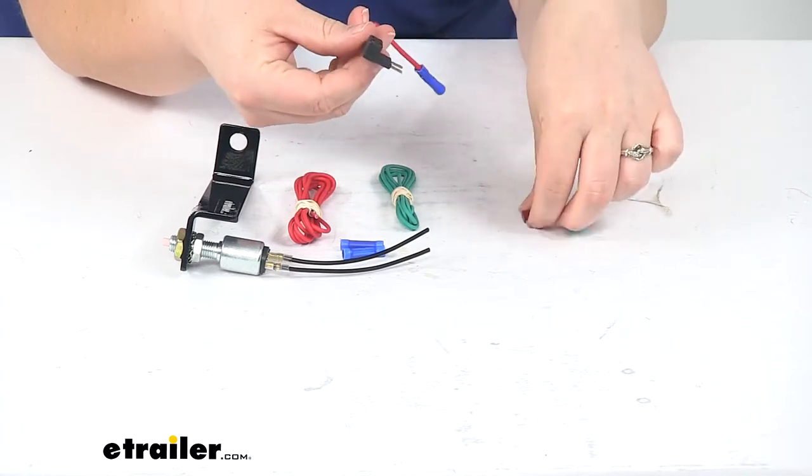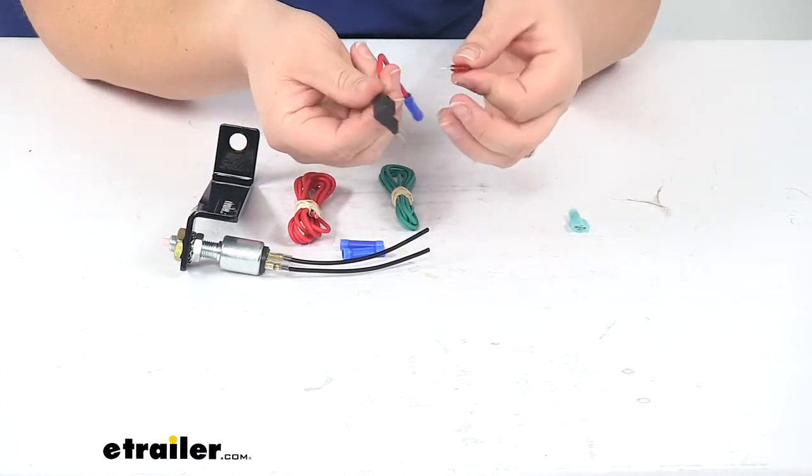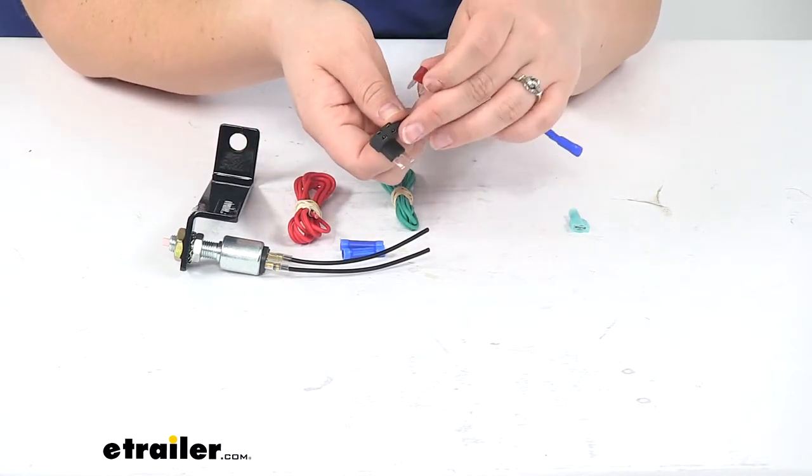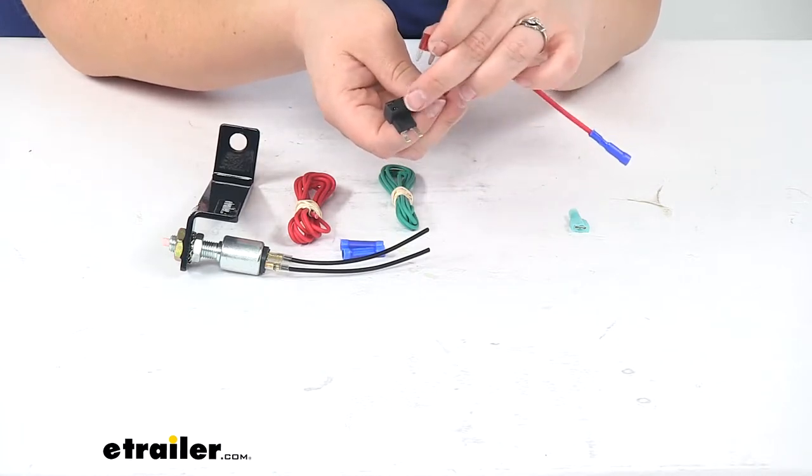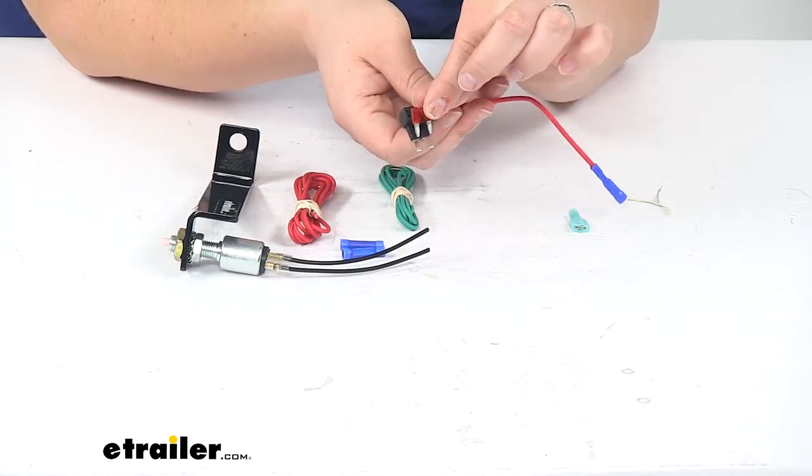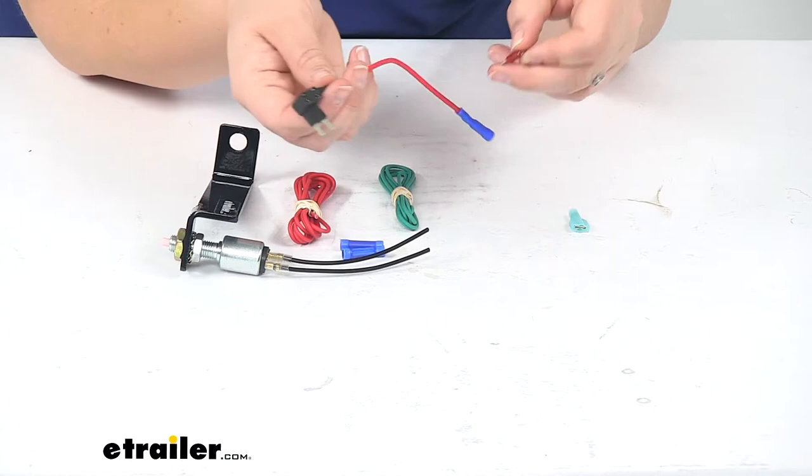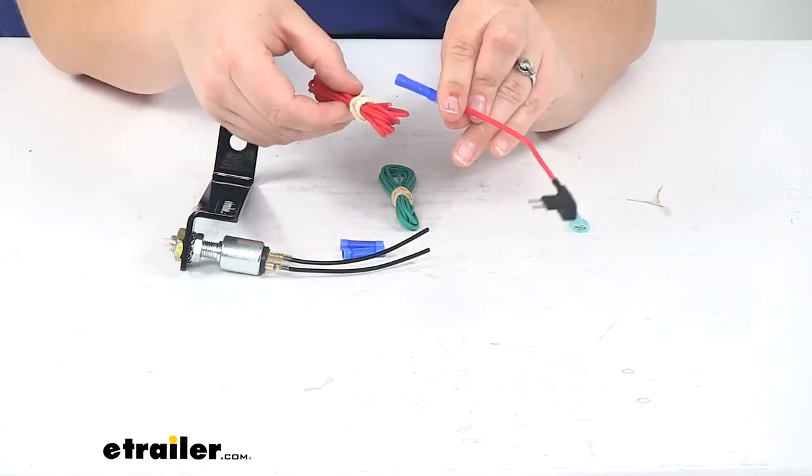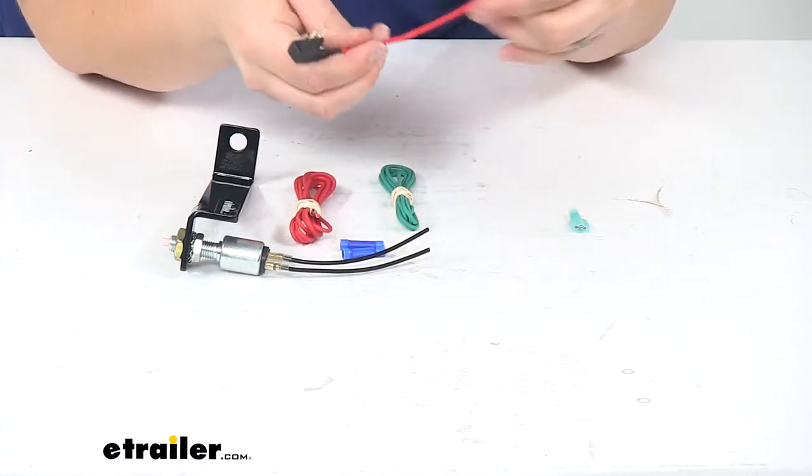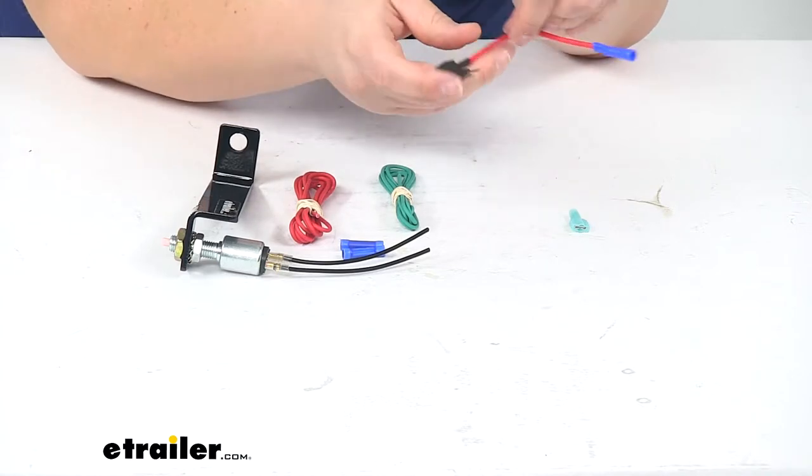It comes with a fuse tap. When you install this, make sure the fuse you're replacing goes into the bottom slot, and the fuse they provide goes in the top. That connects with the butt connector there. It's going to depend on your vehicle and what you have installed.